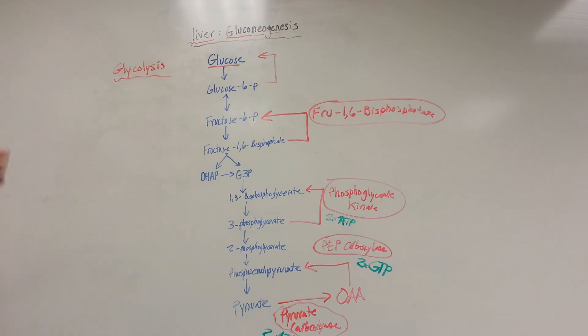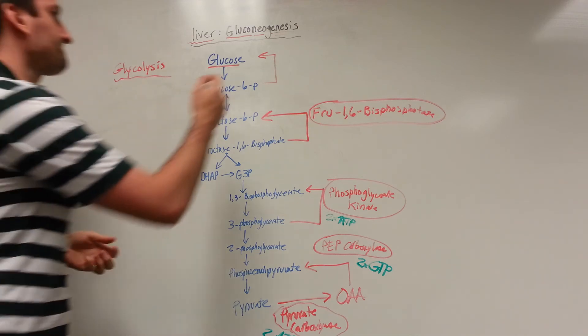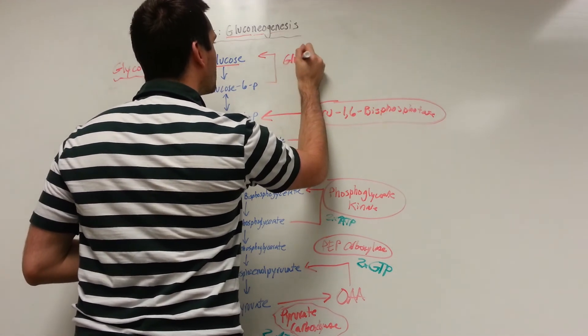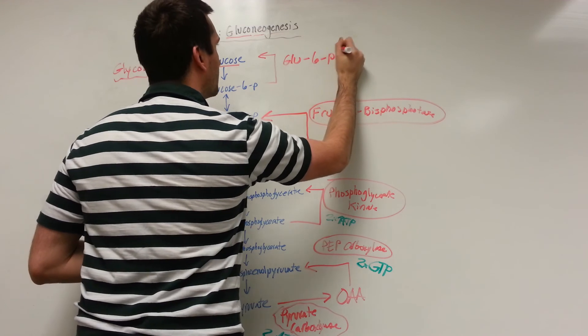Then finally we undergo another reversible reaction and get to our last step. This is what I first covered - it'll be the glucokinase or the hexokinase that does the forward reaction. So now we need another enzyme to catalyze our reverse reaction. This one is going to be glucose 6-phosphatase.